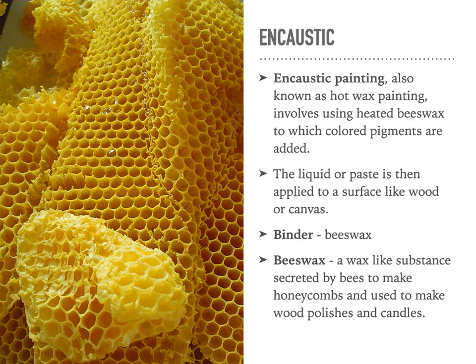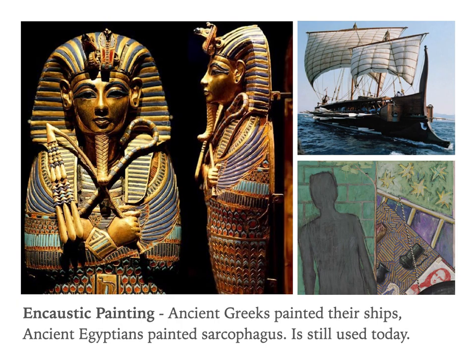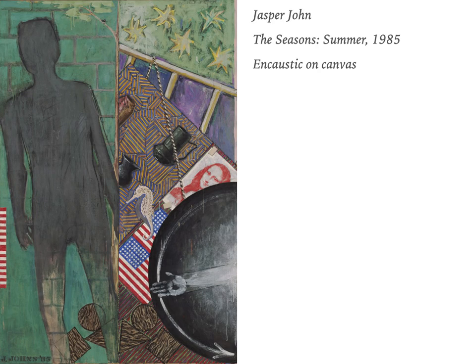You have to have the beeswax heated all the time, so that can make it a little bit difficult. Beeswax is a wax-like substance secreted by bees to make honeycombs, and used to make wood polishes and candles. Encaustic painting was used in ancient Egypt by the Coptic Christians, some of the earliest Christians in history, and they used them for sarcophagus portraits. It was also used by ancient Greeks to paint their ships, and it is still used today. This is a work by Jasper Johns, The Season, Summer 1985 — encaustic on canvas.